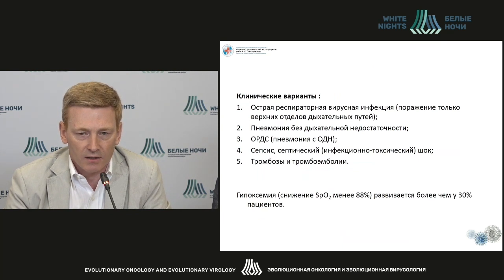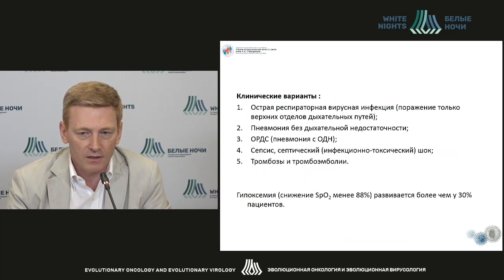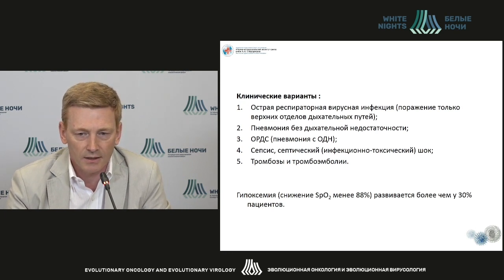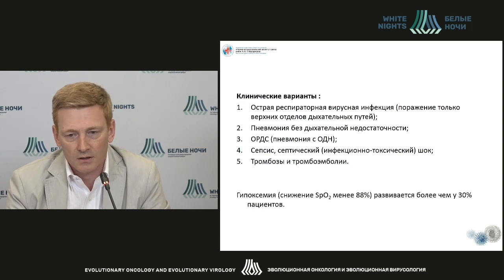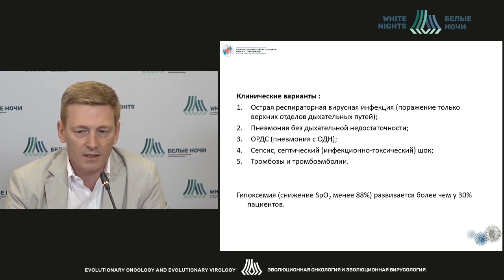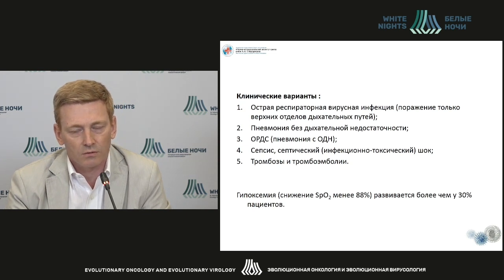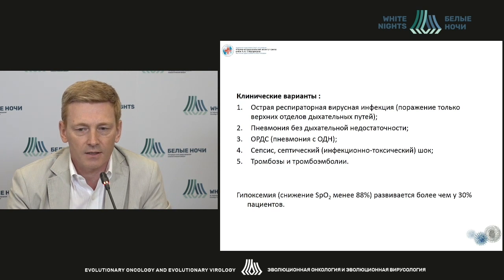Today we recognize different clinical variants of COVID-19 disease. The most favorable is acute respiratory viral infection with impairment only of the upper respiratory airways. Then pneumonia without respiratory failure; acute respiratory distress syndrome with acute respiratory failure; sepsis; septic shock; thrombosis; and thromboembolism. The most favorable course is asymptomatic infection, where a person is identified as having had the disease only through the appearance of antibodies in their blood.